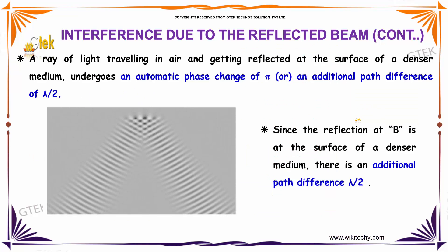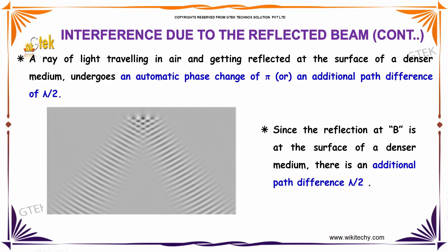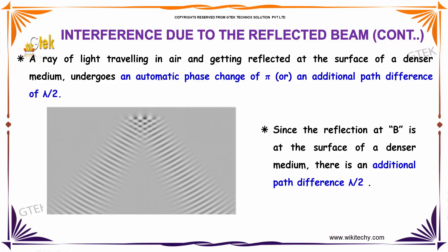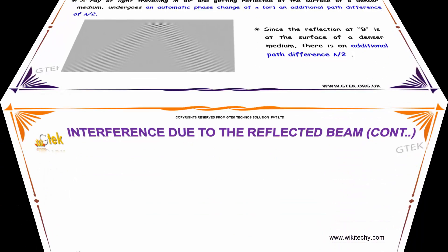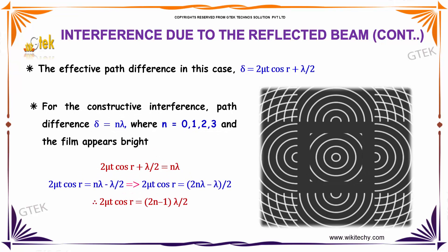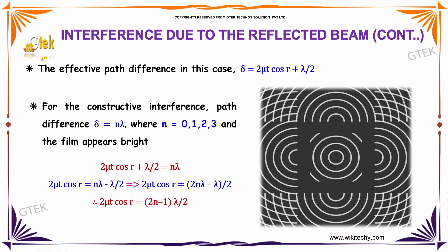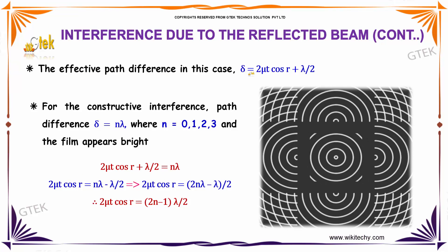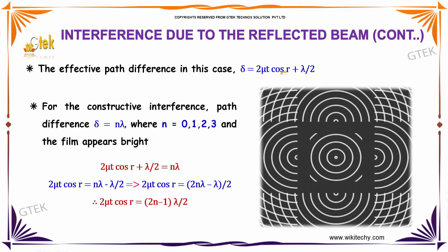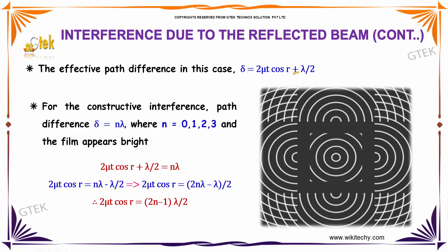For interference due to the reflected beam: a ray of light traveling in air and reflecting at the surface of a denser medium undergoes a phase change of pi, giving an additional path difference of lambda by 2. Since the reflection at B is at the surface of a denser medium, there is an additional path difference of lambda by 2. So the effective path difference is delta equal to 2 mu T cos r plus lambda by 2.